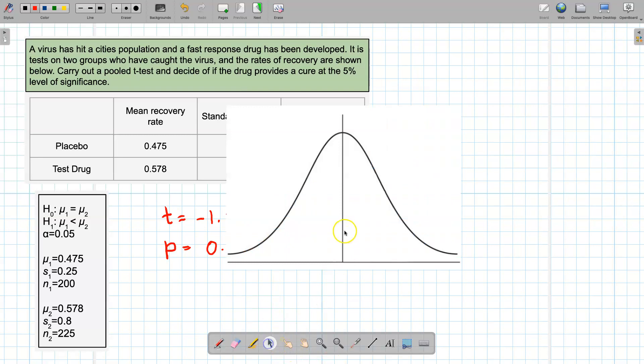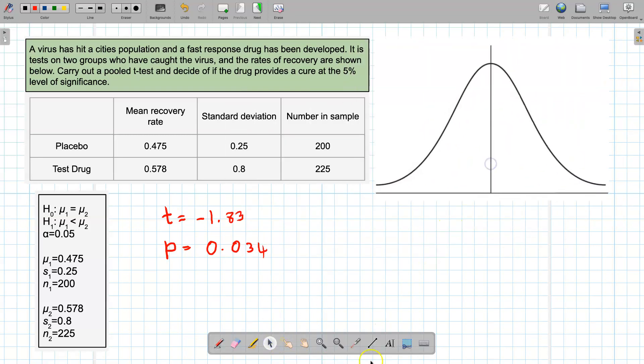I think about having a t-curve, student t-curve, and I think about this 5 percent level of significance. This is my significance level, and I think where is p? If p is inside that shaded area, which it is, then we reject H0.